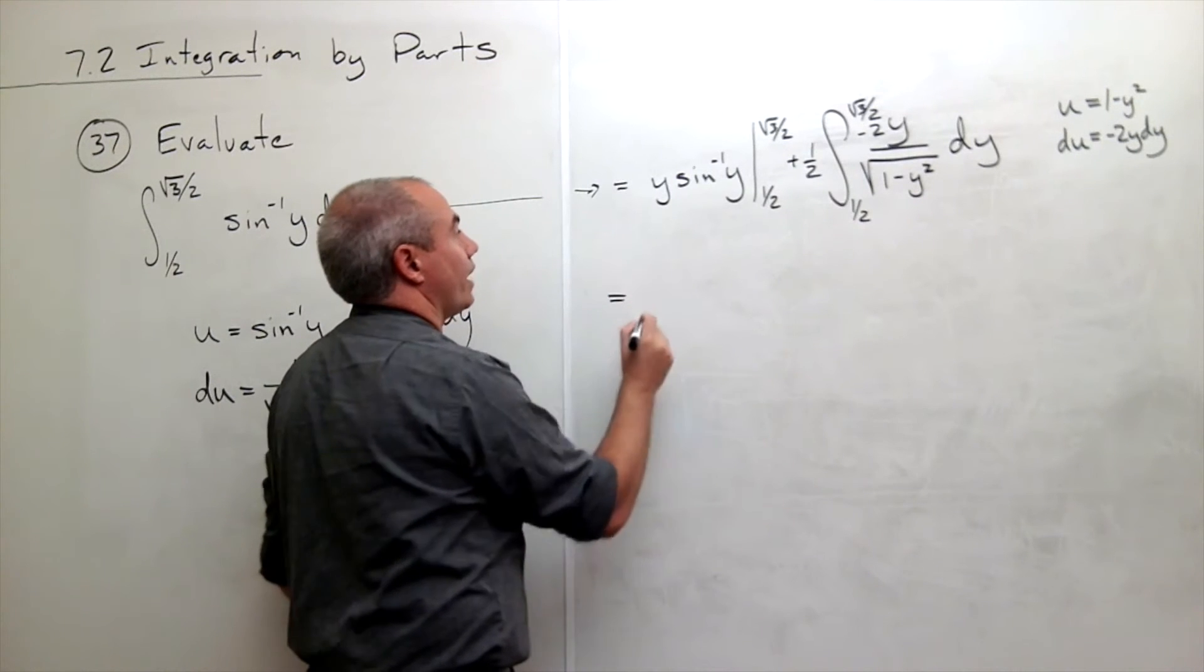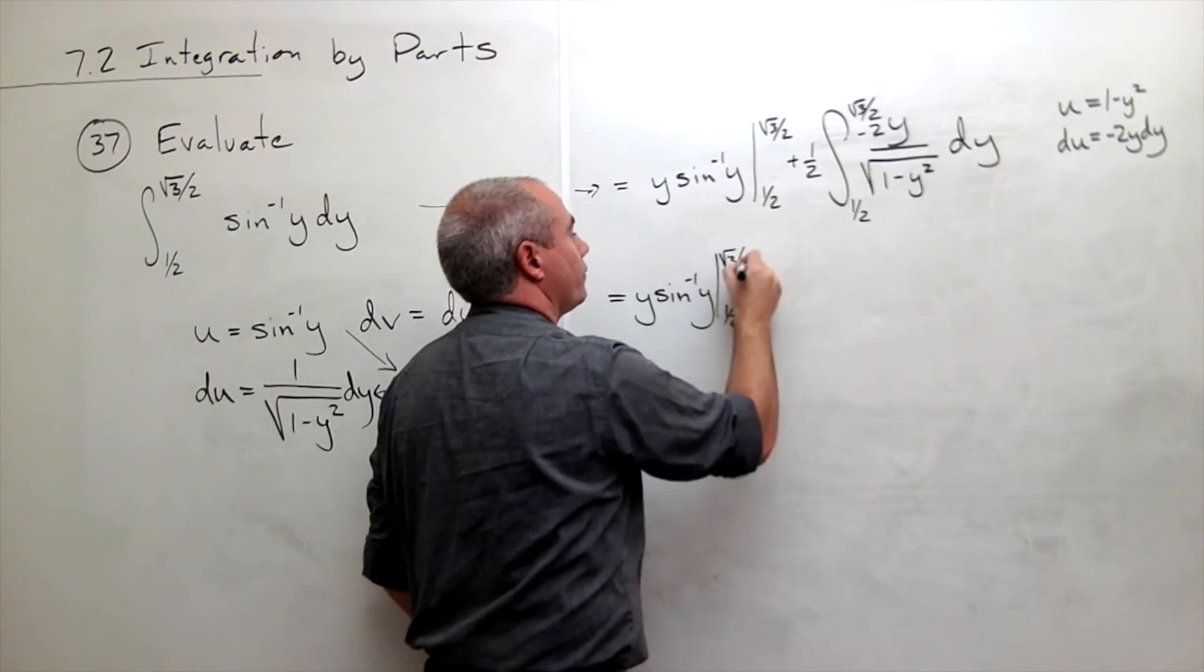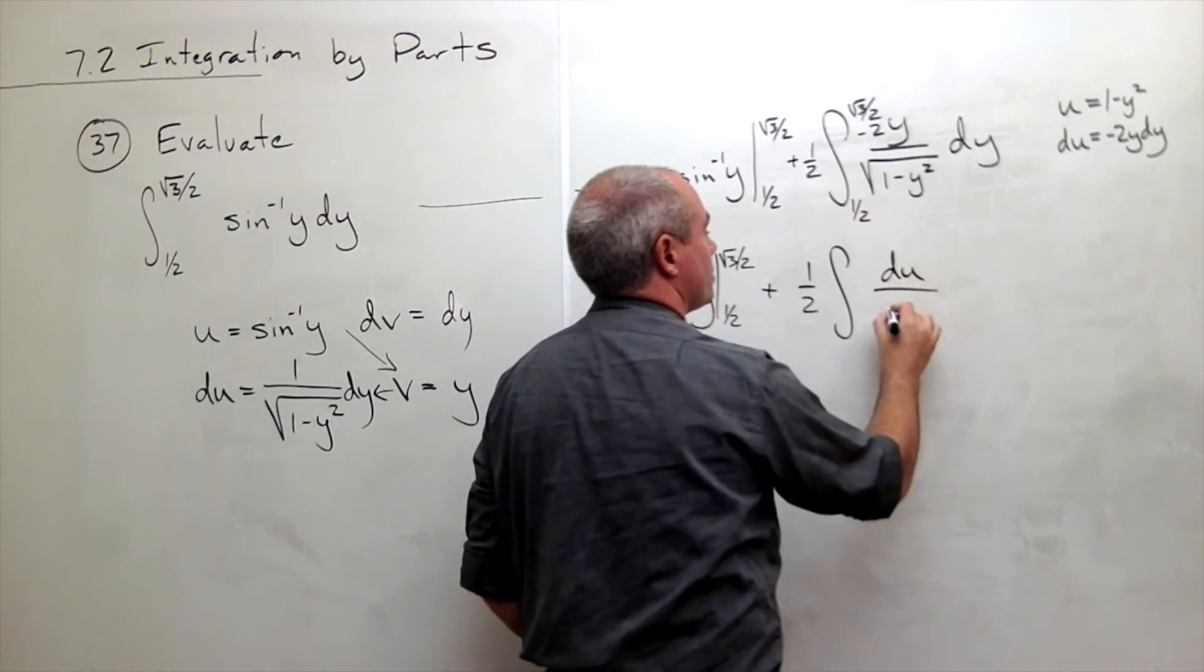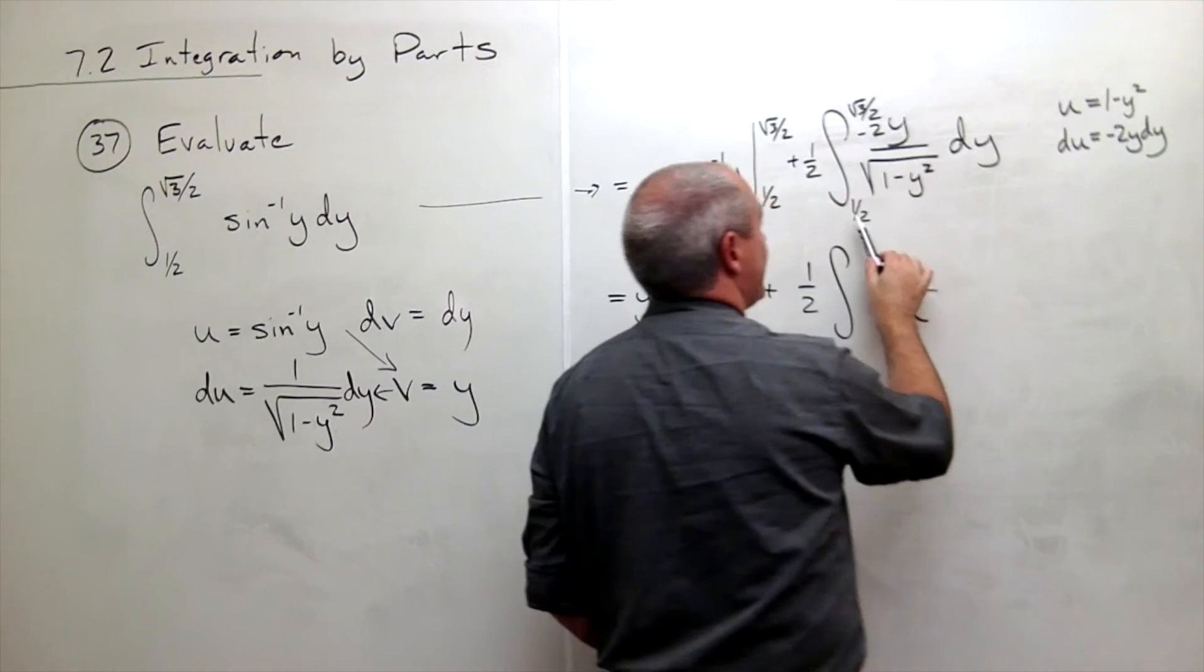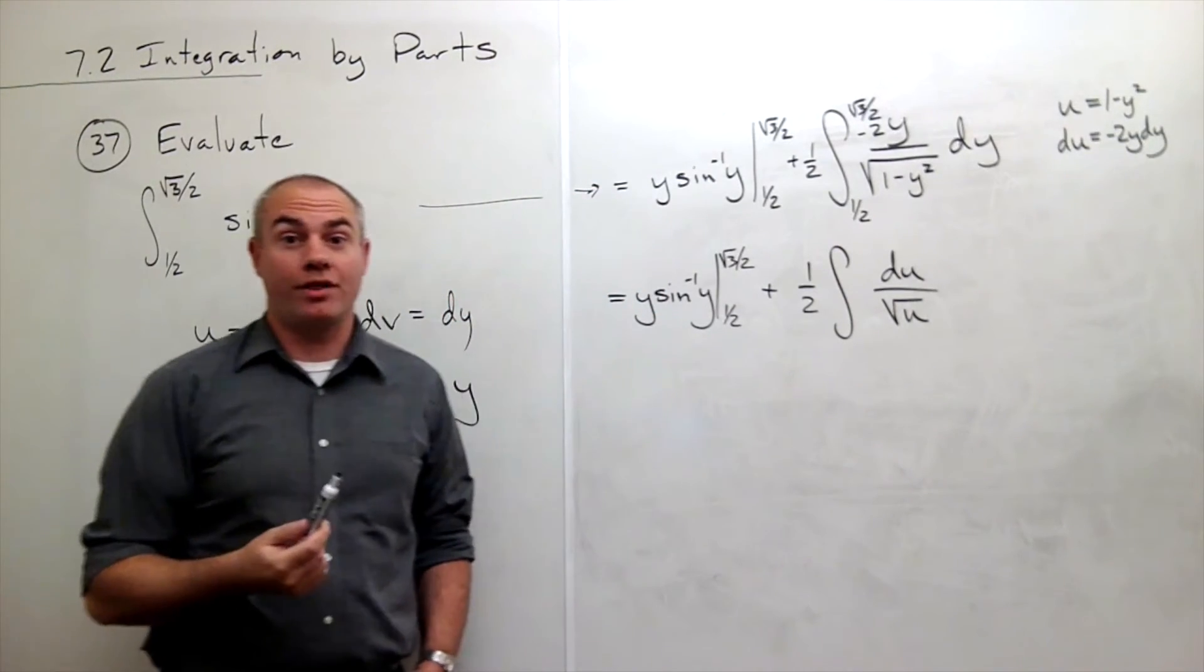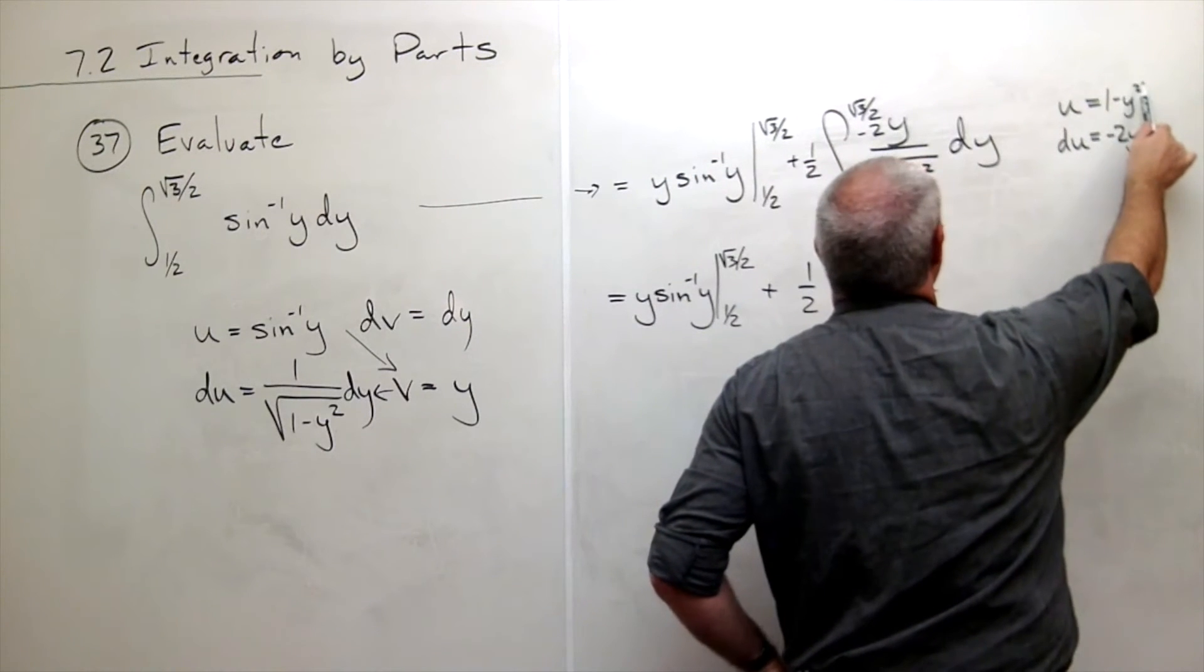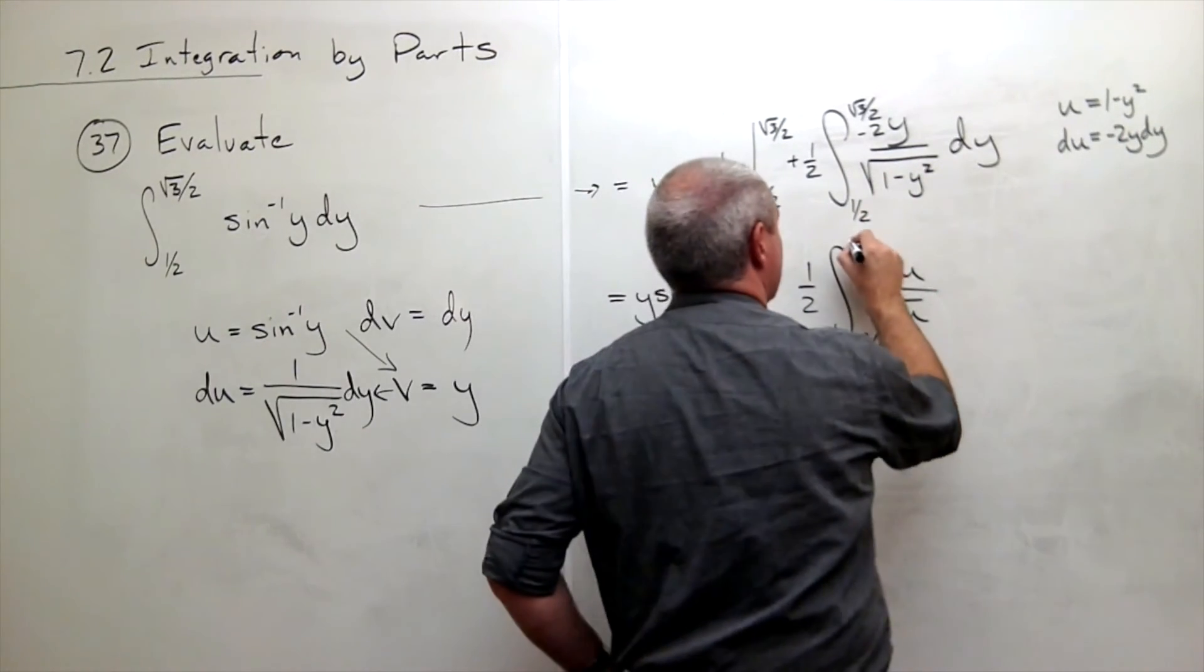So let's do this. I'll rewrite. This is y sine inverse of y evaluated from a half to root 3 over 2 plus 1 half integral of the whole top is du and the bottom is the square root of u. Now I can change my limits of integration. If y is a half, then u is 1 minus a half squared or 1 minus 1 fourth. 1 minus 1 fourth is 3 fourths. So this is 3 fourths. And then if I plug in square root 3 over 2, I get 1 minus square root 3 over 2 squared, which is 3 over 4. 1 minus 3 fourths is 1 fourth. So this is 1 fourth.